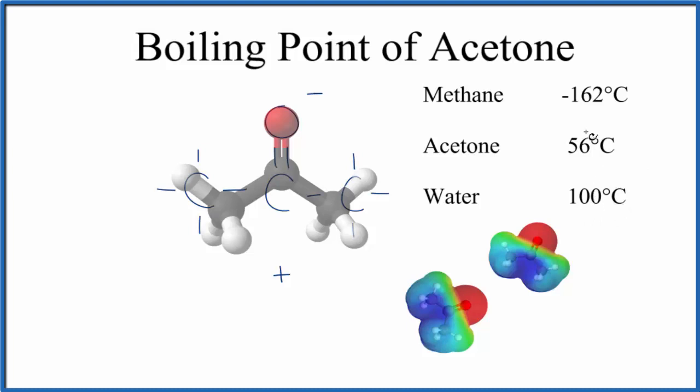So the boiling point for acetone, it's 56 degrees Celsius. The reason this is so high is because we have polarity. We have these dipole-dipole interactions here. That means it takes more energy to change acetone from a liquid to a gas. We have to separate these molecules.